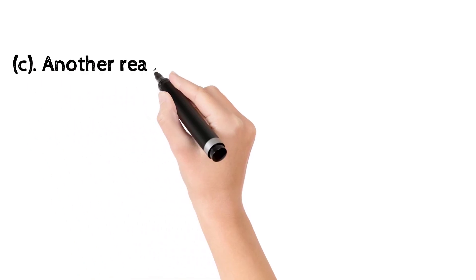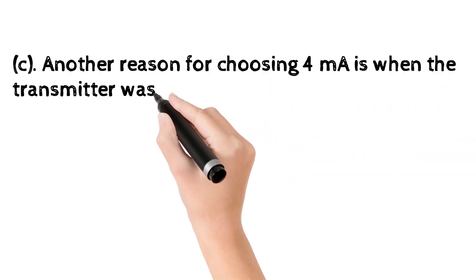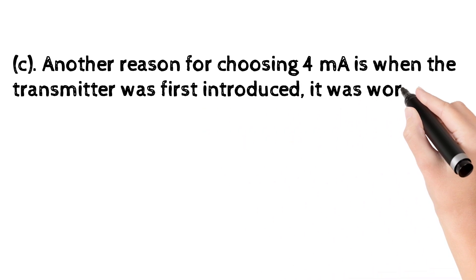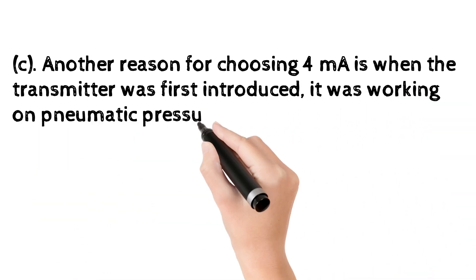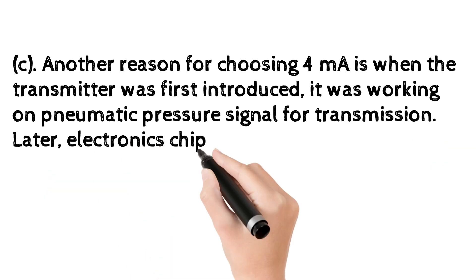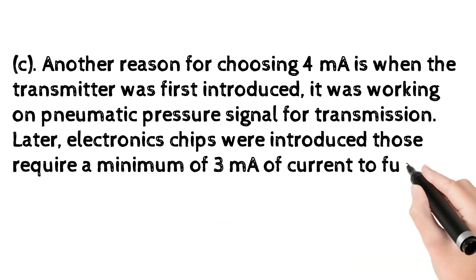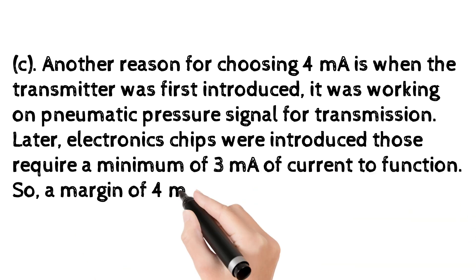1C. Another reason for choosing 4 mA is when the transmitter was first introduced, it was working on pneumatic pressure signal for transmission. Later, electronics chips were introduced. Those require a minimum of 3 mA of current to function. So a margin of 4 mA is taken as reference.